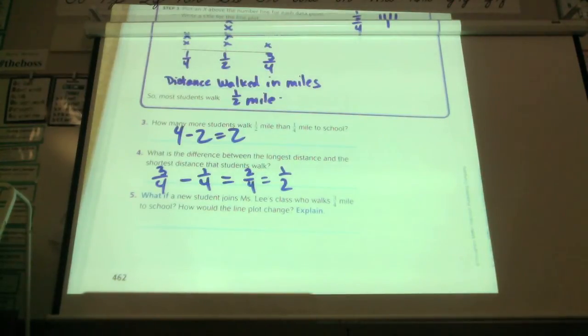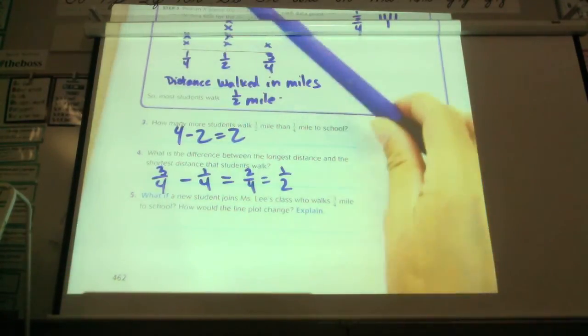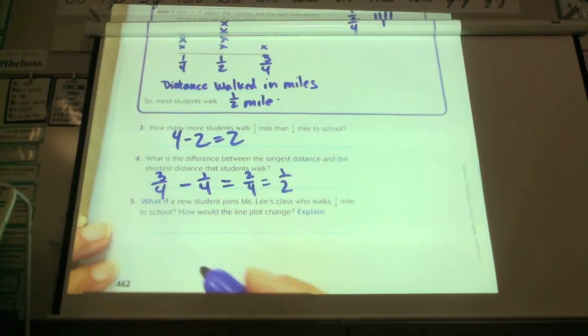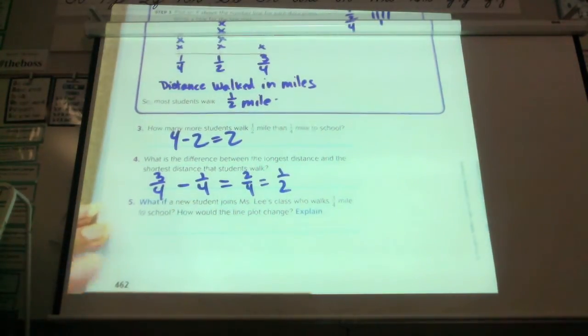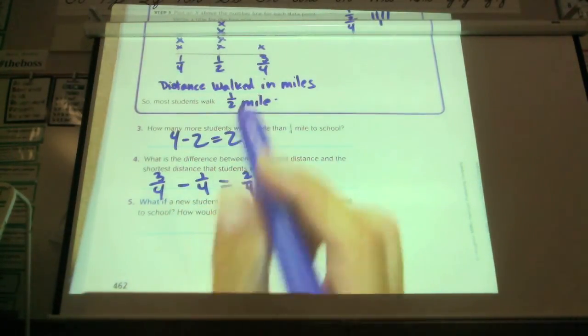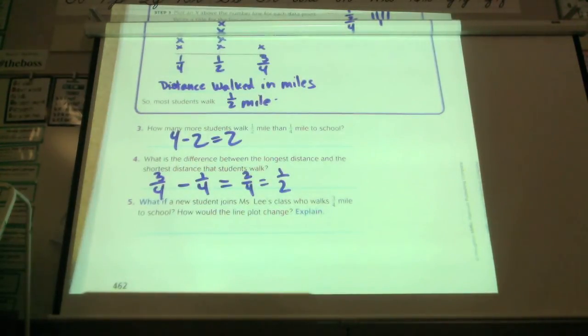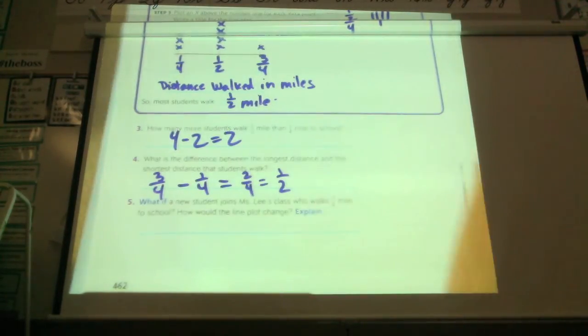What if a new student joins Ms. Lee's class who walks three-fourths of a mile to school? How would that change my line plot? In words, I want you to write, how would that change my line plot? Okay, I have one more student who walks three-fourths. Okay, who would like to share what they, how they answered this question? Daniel. There you go. That was a very nice explanation. She said it would change my line plot by adding another X to the three-fourths mark up there.